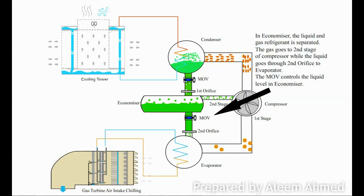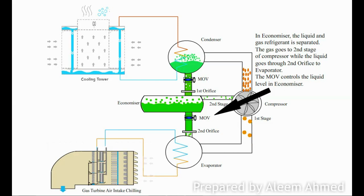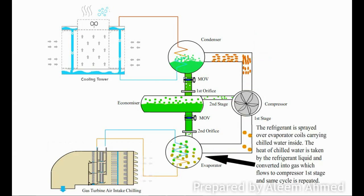In the economizer, the liquid and gas refrigerant is separated. The gas goes back to the compressor second stage inlet, while the liquid goes through the second orifice to the evaporator. The economizer MOV controls the liquid refrigerant level in the economizer.